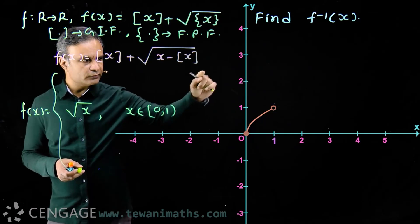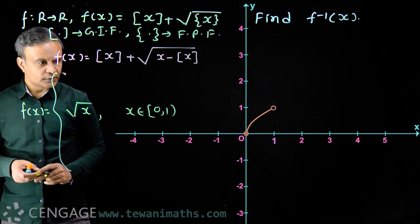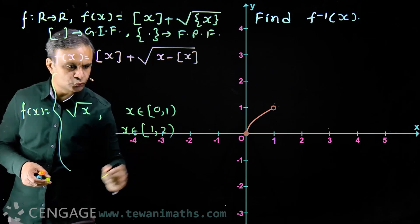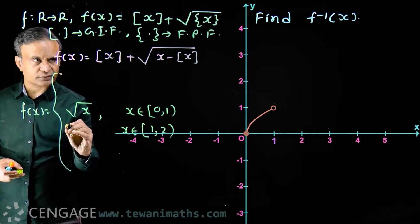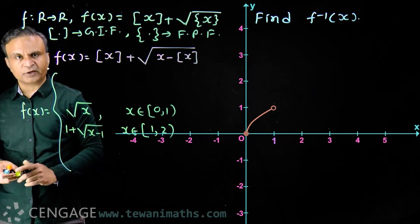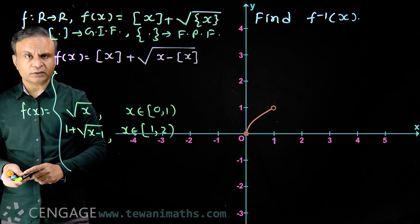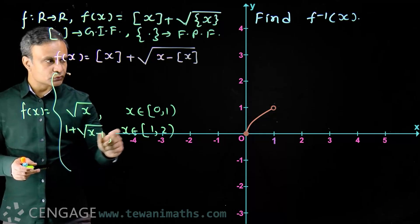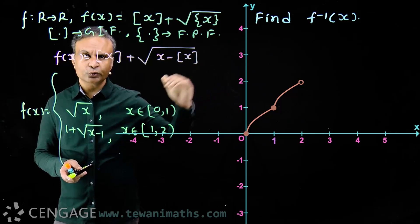We know how the √x graph looks — it is part of a parabola. For x belonging to [1, 2], the greatest integer of x is 1, so f(x) = 1 + √(x − 1). At x = 1, the value is 1, and at x = 2, the value is 2. So on this interval, the graph rises from 1 to 2.